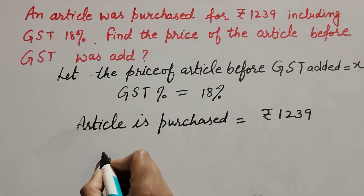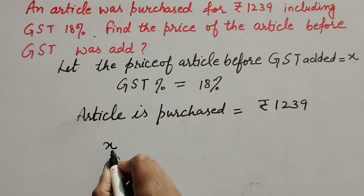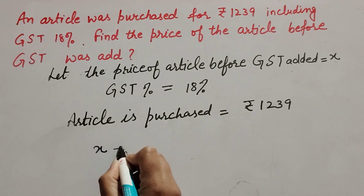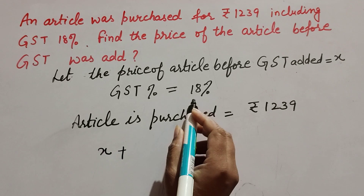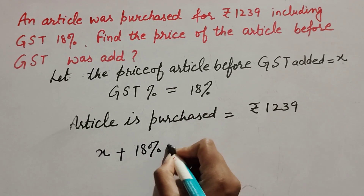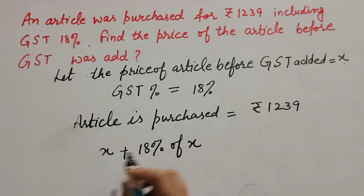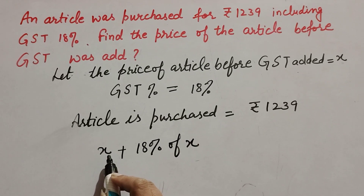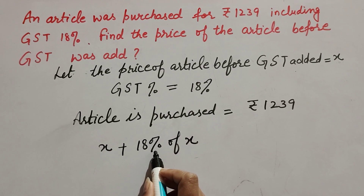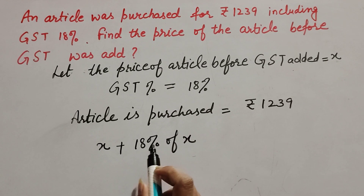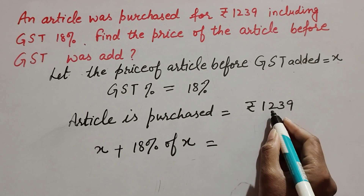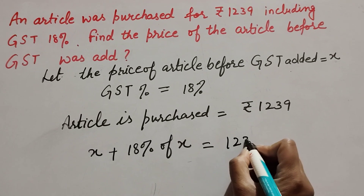The price of article is x and GST is 18%, so GST is applied on the cost price of the article. Cost price of article is x, plus GST which is 18% of x. So: x plus 18% of x equals 1239.